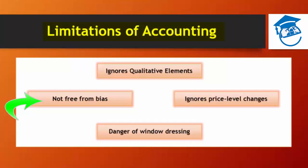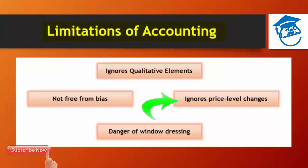The third limitation is that accounting ignores price level changes. Since financial statements are prepared on historical costs, fixed assets are shown in the balance sheet at historical cost minus depreciation — the book value — but this fails to reflect the value currently realizable in the market. Thus, accounting ignores changes in price levels or inflation, and analysis of such financial statements will not yield strictly comparable and scientific results. A separate branch called inflation accounting has been developed to overcome this problem.